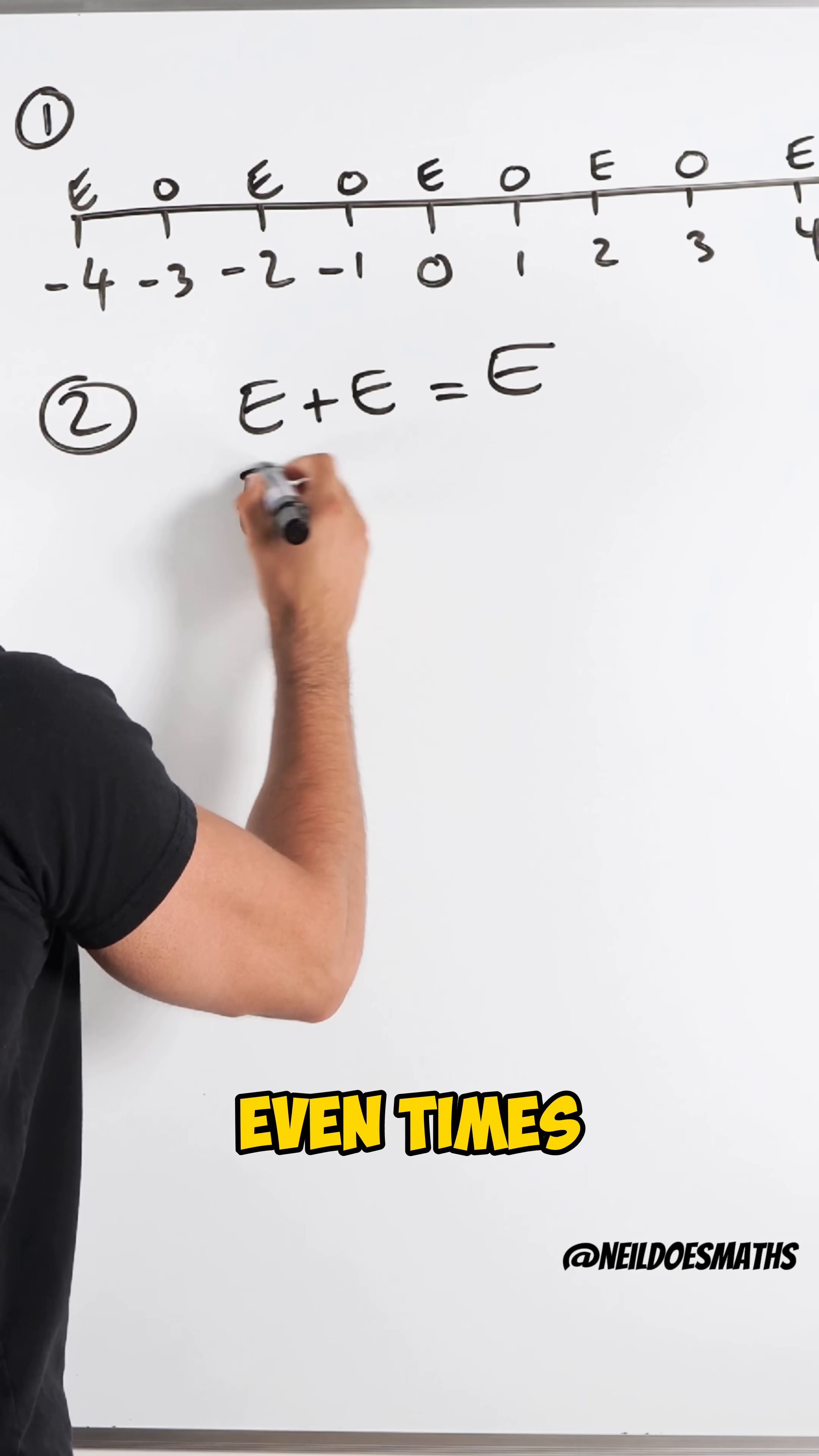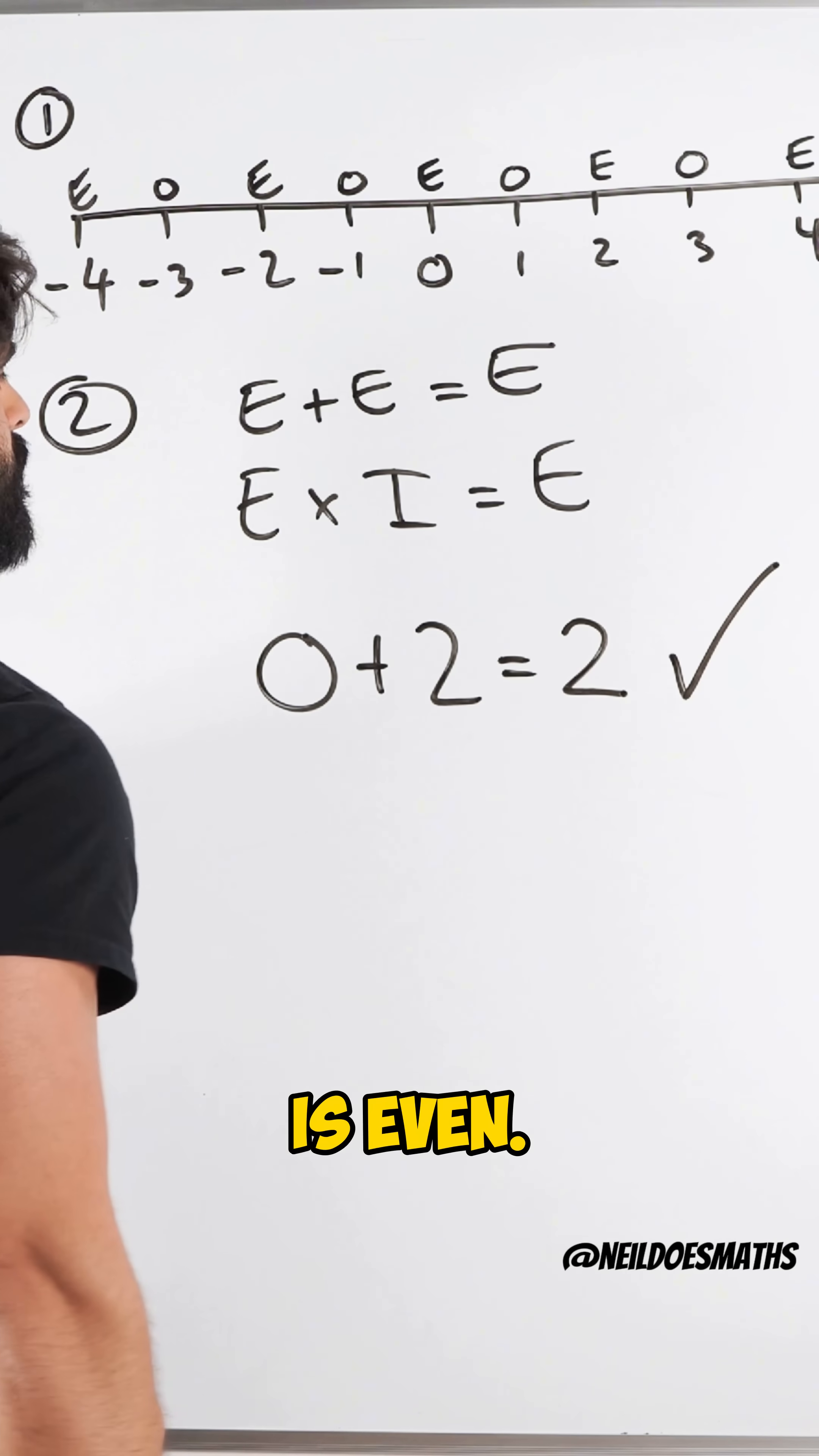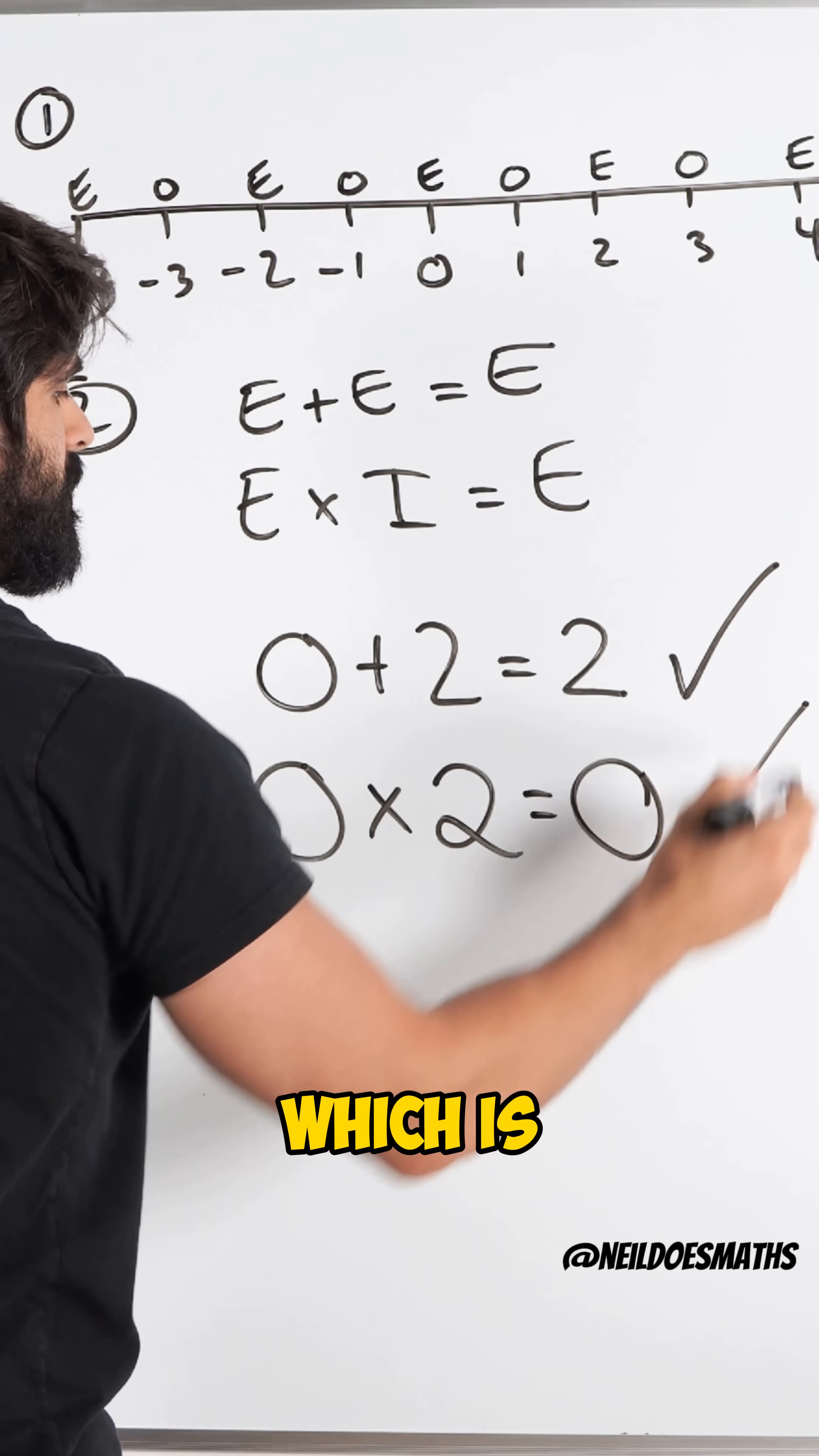And even times an integer is also even. For example, zero plus two is two, that is even. If I take an even number, like I'm suggesting zero is, if I multiply that by an integer, whatever, two, I also get zero, which is then even.